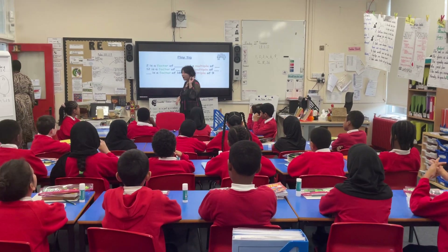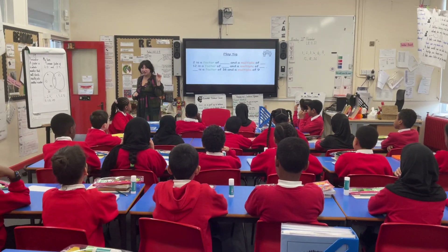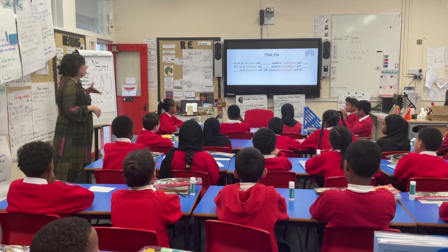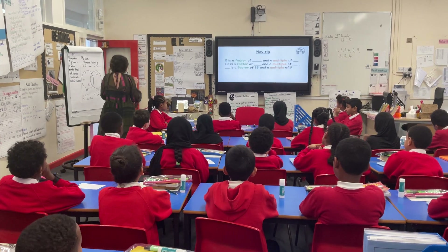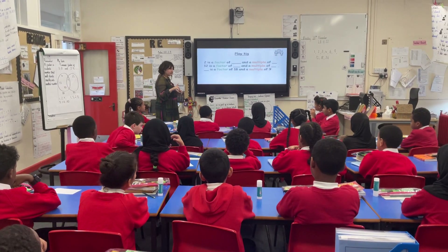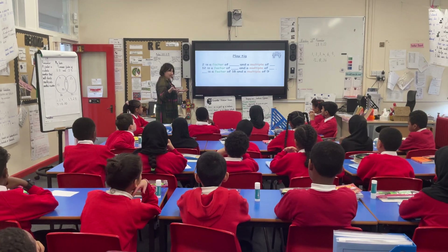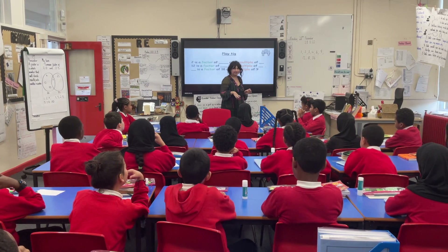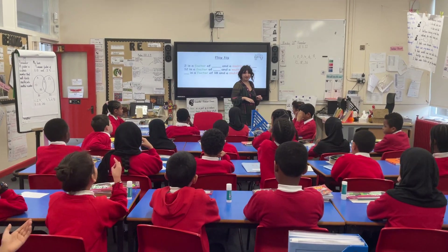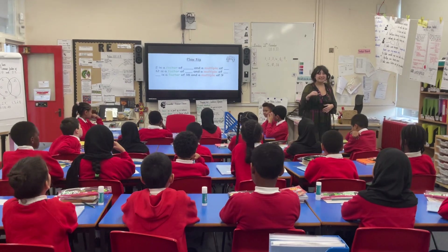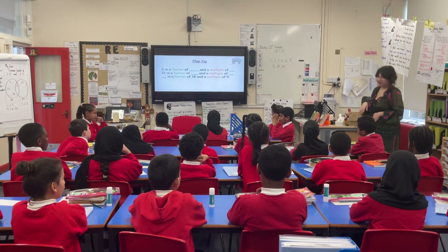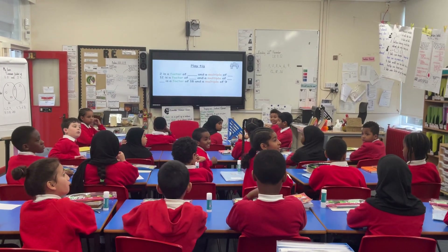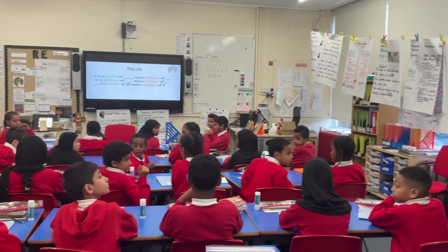Ready? Okay. So on the board I've got missing numbers. Read the sentence — it's just like in history and geography where we've got the words missing. Here we've got the numbers missing. Ready? Two is a factor of... loads of numbers. Two is a factor of and a multiple of... Turn it all — off you go.